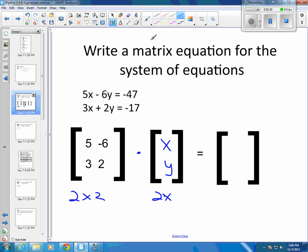So the last thing over here would be putting in my negative 47 and my negative 17. And once I've done that, I have written my matrix equation for this system of equations. So that's basically the first step is just writing the system of the matrix equation.